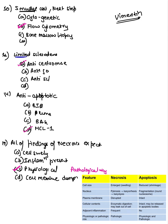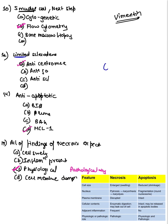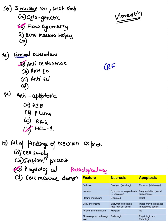Then they asked about limited scleroderma, which is associated with anti-centromere antibodies. We have limited scleroderma and diffuse scleroderma. CREST syndrome — remember: Calcinosis cutis, Raynaud's phenomenon, Esophageal dysmotility, Sclerodactyly, and Telangiectasia.